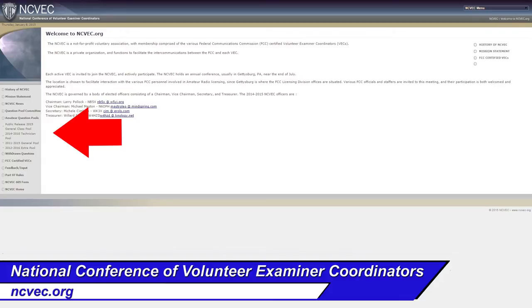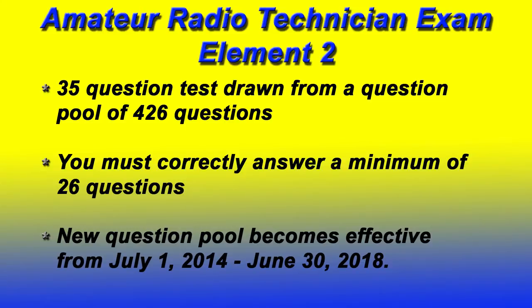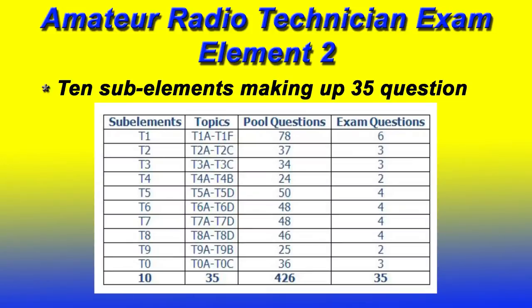From ncvec.org you can go to the technician pool and download all the questions with the answers by clicking the link. When you study from the question pool, keep in mind a 35-question test is drawn from a pool of 426 questions, and you must correctly answer a minimum of 26 questions. There are 10 segments making up the total of 35 questions. For instance, T1 has 78 questions in it, of which you'll be asked six.